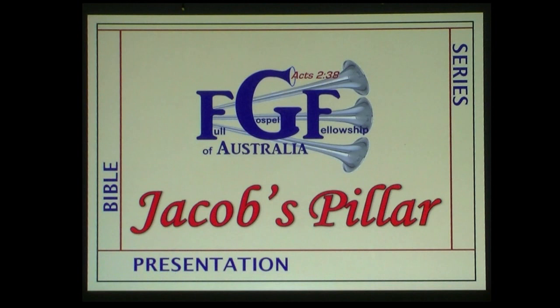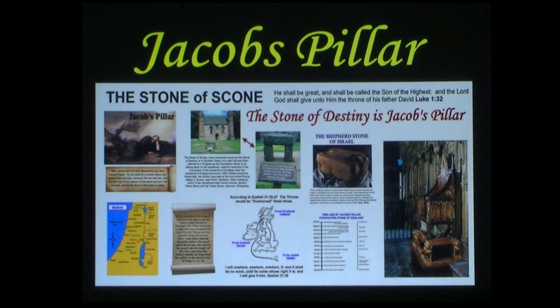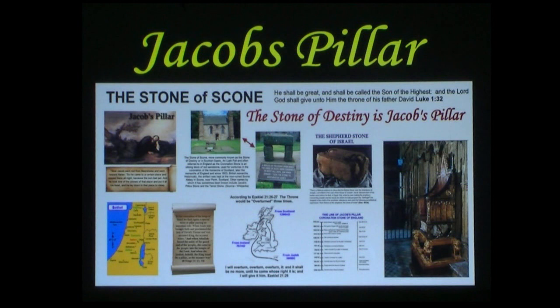Jacob's pillar. You may have noticed in the front of our hall we have our display boards up, and one of the display boards is called Jacob's Pillar, the Stone of Destiny, or the Stone of Scone. We're going to cover a little bit about why that board is there and what it's about, and some of the history of the stone. As we go through, I hope you see that it's actually quite an amazing prophecy and a fulfillment of prophecy — not that we want to be worshipping a stone, but it is significant and it represents a lot more than just a rock under the coronation chair.